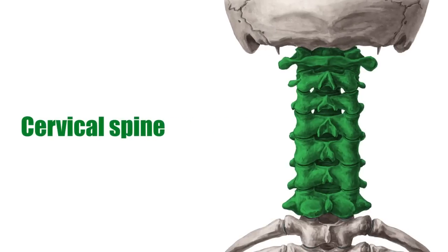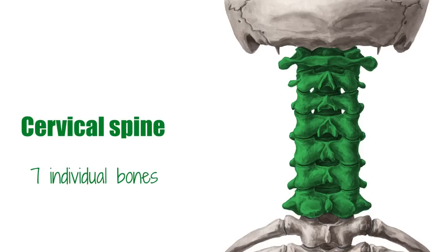The cervical vertebrae are the smallest vertebrae in the spinal column. There are 7 individual bones, and the 1st, 2nd, and 7th are uniquely shaped, whereas the 3rd to the 6th are similarly shaped. First, we will discuss the 3rd to 6th vertebrae, then the 1st, 2nd, and 7th.